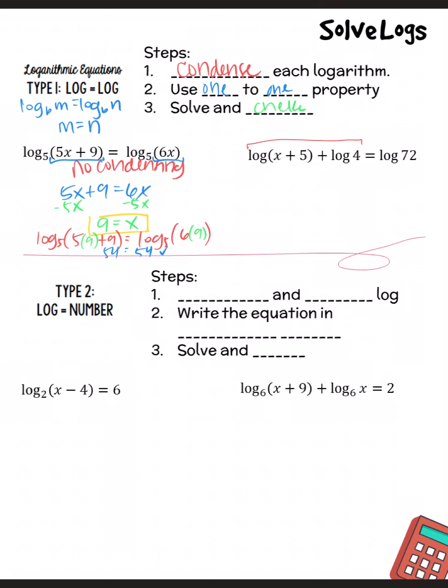The second one, we do have to condense, like I said. So condensing this first, remember whenever we've got our addition sign, that means multiplication. So I'm going to take log 4 times X plus 5 equals log 72, and I'm going to go ahead and distribute my 4. So then I really have log 4X plus 20 equals log of 72. Now I have log equal log. They have the same basis.